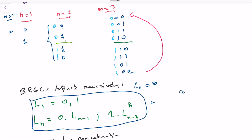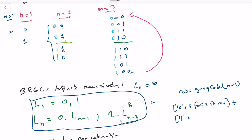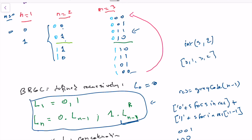To implement this, we get the result for gray_code(n-1) as a recursive call. Then we construct our result as '0' + s for every s in the previous result, and add to that '1' concatenated with every s in the reversed previous sequence. We'll get these as strings in binary format, and in Python we can convert that using int(s, 2) to get the decimal numbers. Let's write it out in LeetCode.